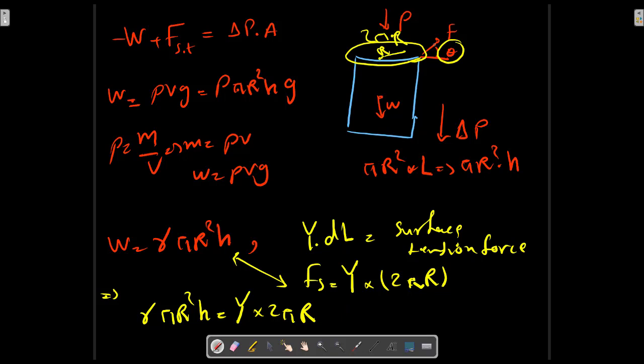Excuse me, with theta, we have to deal with the vertical direction using cosine theta instead. So the relation between H and theta equals to 2*gamma*cos(theta) over gamma*r*H equals 2*gamma*cos(theta), so H equals 2*gamma*cos(theta) over gamma*r.